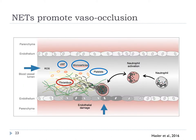NETs promote vascular occlusion. NETs forming in circulation provide a scaffold that promotes deep vein thrombosis, DVT, a condition that is more prominent in patients with cancer and obesity. NET formation driving thrombosis is thought to be initiated by hypoxia-induced release of von Willebrand factor, VWF, and P-selectin from the endothelium. Then, recruited and activated neutrophils accumulate in the vasculature in a P-selectin-dependent manner, followed by platelet recruitment.